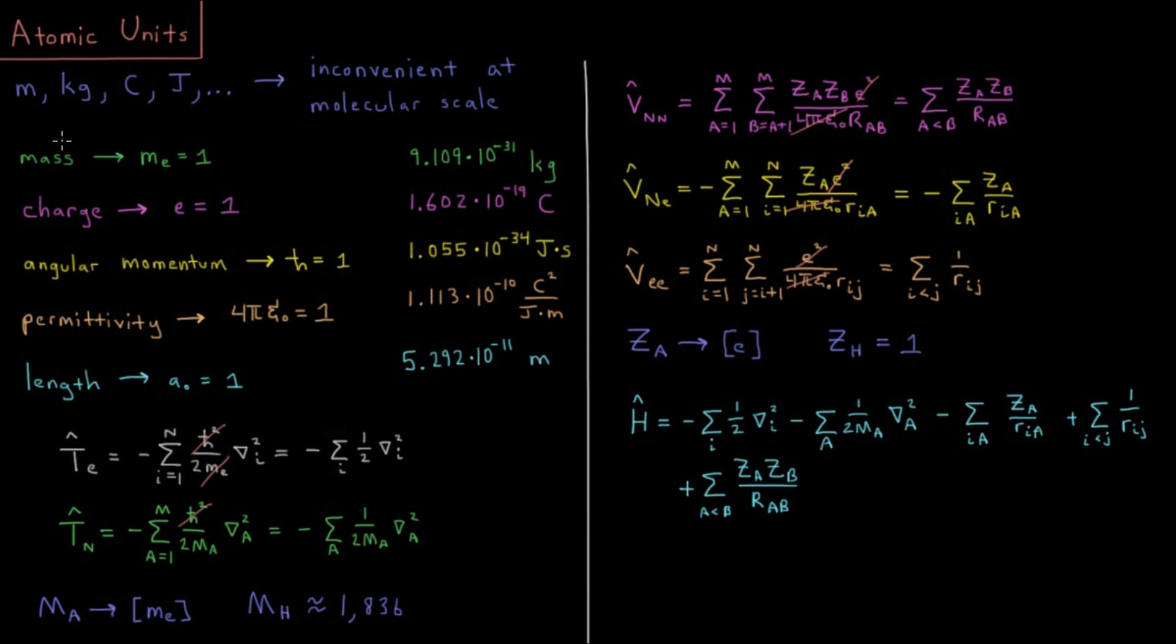So SI units for common physical quantities, things like distance, mass, charge, energy, are standard units: SI units of meters, kilograms, coulombs, joules. Those are inconvenient for the molecular microscopic scale that we're operating at when we're talking about atoms and molecules.